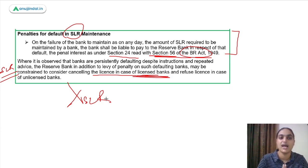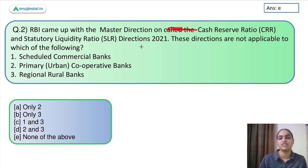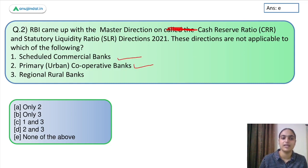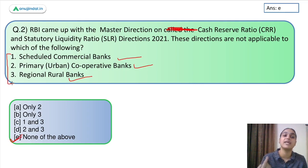Overall we got a good view about CRR and SLR. Moving to question number two: RBI came up with master directions on Cash Reserve Ratio and Statutory Liquidity Ratio Directions 2021 — these directions are NOT applicable to which of the following? The options include scheduled commercial banks, primary cooperative banks, and regional rural banks. The answer is option E — none of the above — as all these entities are covered under these directions.